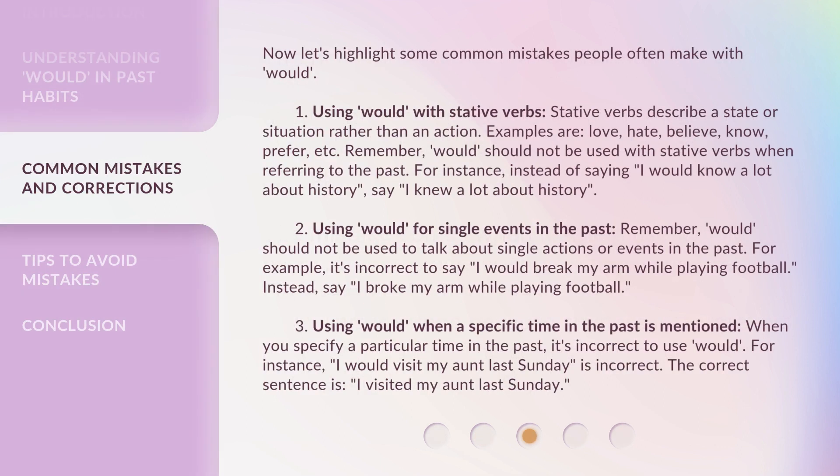Now, let's highlight some common mistakes people often make with 'would.' Mistake 1: Using 'would' with stative verbs. Stative verbs describe a state or situation rather than an action — examples are love, hate, believe, know, prefer, etc. Remember, 'would' should not be used with stative verbs when referring to the past. For instance, instead of saying 'I would know a lot about history,' say 'I knew a lot about history.'